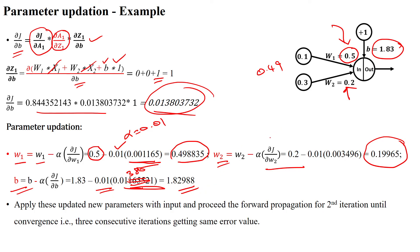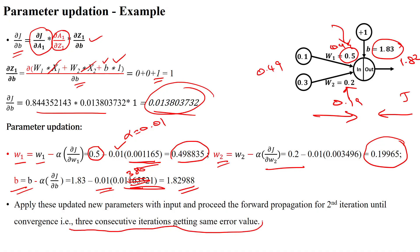So now we have updated values: W1 = 0.49, W2 = 0.19, and B = 1.82. Again you perform forward propagation and compute the error. If it is not close to zero, perform backward propagation again. Repeat this process until convergence — that is, until three consecutive iterations give the same error value. Then you can stop the algorithm. Thanks for watching.